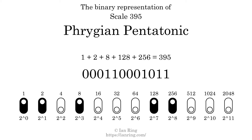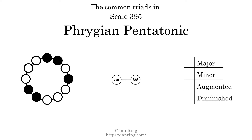Here are the common triads present in this scale. The diagram in the center is a graph of parsimonious voice leading between triads. There is one major triad. There is one minor triad. There are no augmented triads. There are no diminished triads.